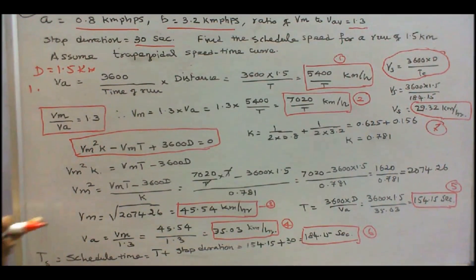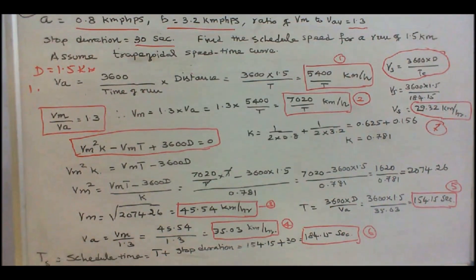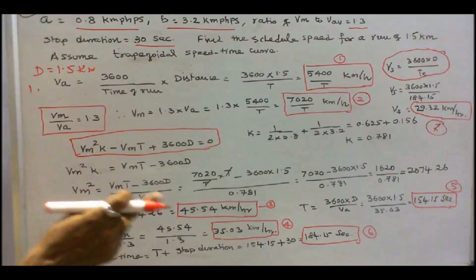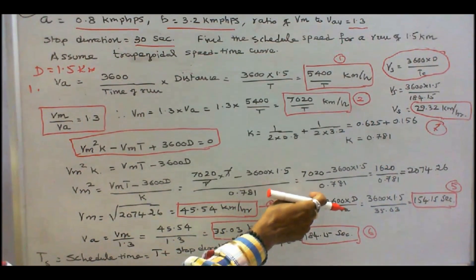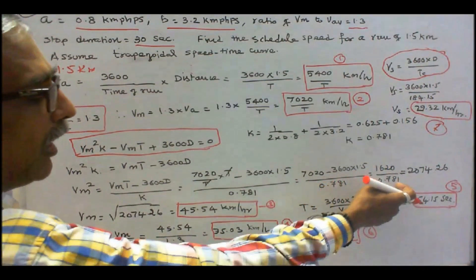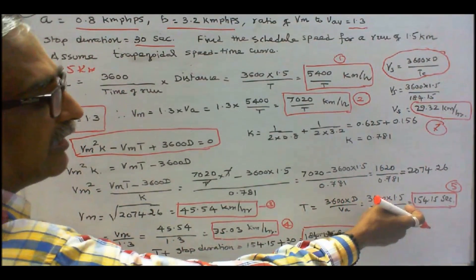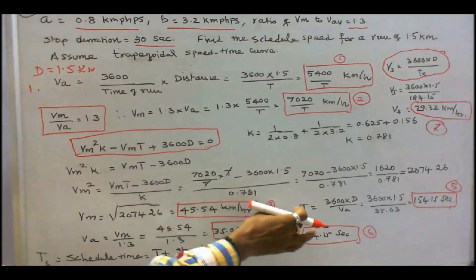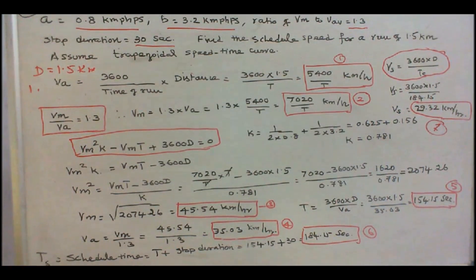With maximum speed 45.54 km per hour, we find the average speed: va equals vm divided by 1.3, that is 45.54 divided by 1.3, which equals 35.93 km per hour. We then find the total time of run: T equals 3600 times d divided by average speed, that is 3600 into 1.5 divided by 35.93, which equals 154.15 seconds.